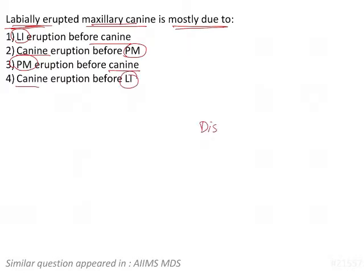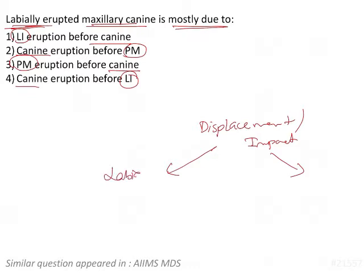Whenever there is displacement or impaction of the maxillary canine, there are two possibilities: either the canine is going to be displaced labially, or the canine is going to be displaced palatally. The etiology of both situations is very different from each other.